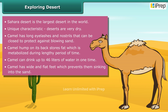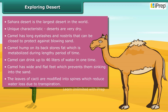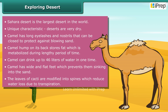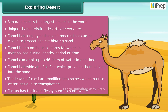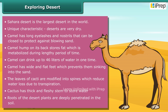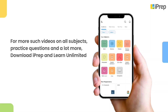Similarly, plants like cacti also show various adaptations to survive in a dry and hot environment. The leaves of cacti are modified into spines, which reduce water loss due to transpiration. The cactus has a thick and fleshy stem to store water, and roots of desert plants deeply penetrate the soil to absorb water.